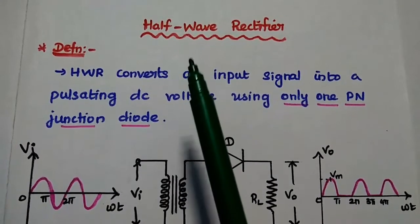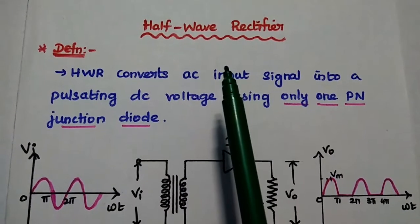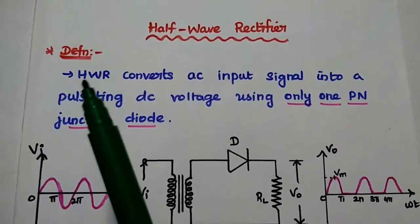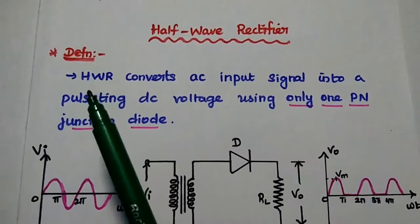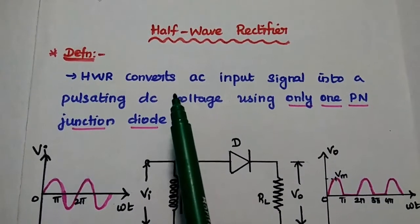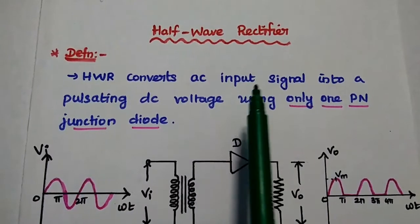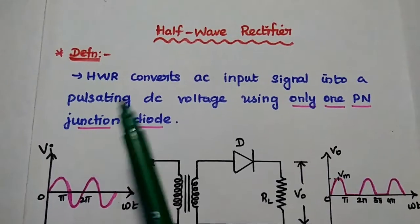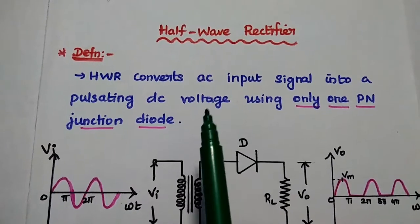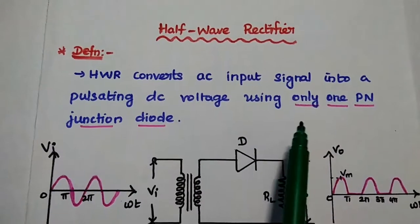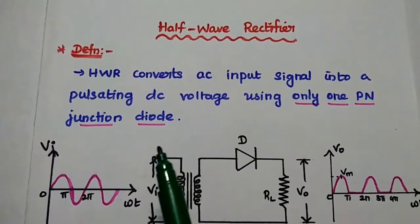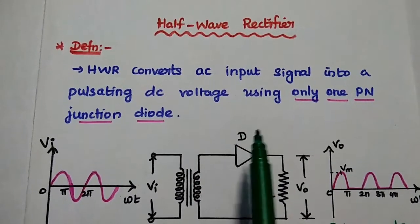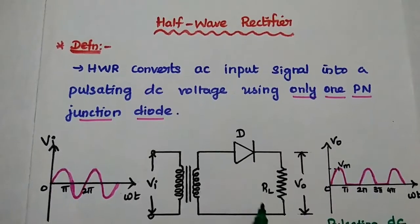Dear students, now we are going to discuss half-wave rectifier and derive its characteristics. Let's start with the definition. Half-wave rectifier is simply denoted as HWR. It is mainly used to convert a bidirectional AC input signal into a unidirectional signal, that is also known as pulsating DC voltage. In this half-wave rectifier, we are going to use only one P-N junction diode, hence it conducts only for the positive half-cycles. That's why it is called a half-wave rectifier.